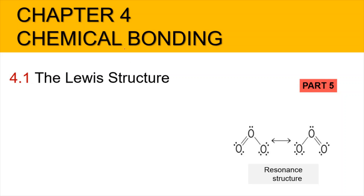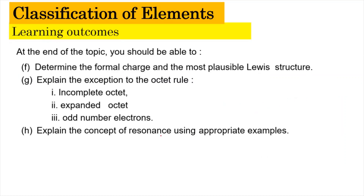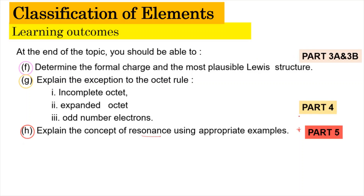Hi, Assalamualaikum and a very good morning. We are still in Chapter 4, Chemical Bonding, and now we're going to focus on subtopic 4.1, Lewis structure, part 5 of the video. In this video, we're going to learn about the concept of resonance using appropriate examples. The learning outcomes for f and g are covered in parts 3a, 3b, and part 4. So without further ado, let's start with part 5.